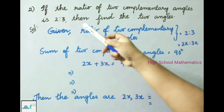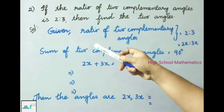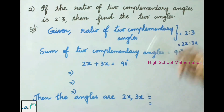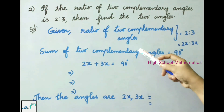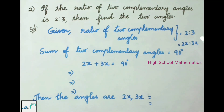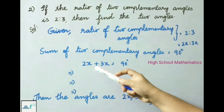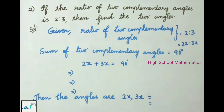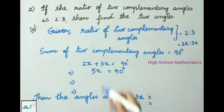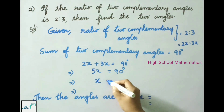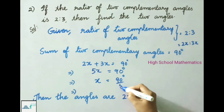Question number 2: if the ratio of two complementary angles is 2:3, find the two angles. Given the ratio is 2:3, we write them as 2X and 3X. We know the sum of two complementary angles is 90 degrees, so 2X plus 3X equals 90 degrees. That gives 5X equals 90 degrees, so X equals 90 divided by 5.